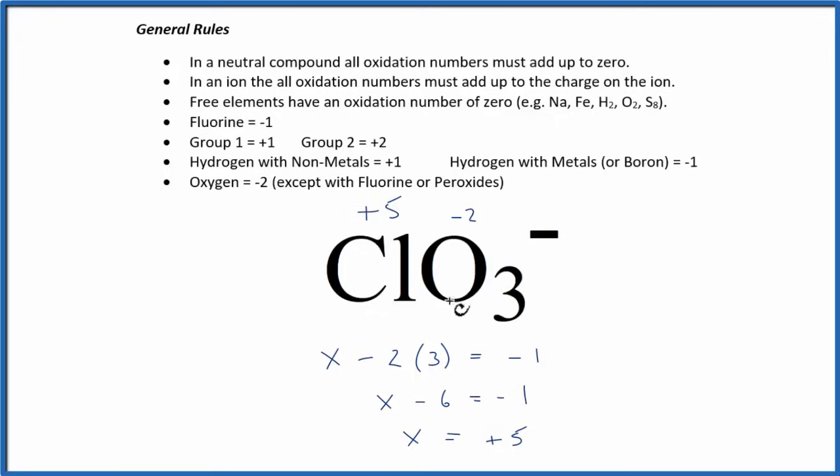And that's the oxidation number on the chlorine. So we found the one that we knew, the oxygen, which is minus 2. We know that it all has to add up to a negative 1 because of the charge here, and we use that information to find the oxidation number on the chlorine.